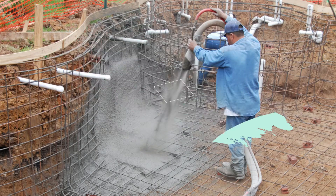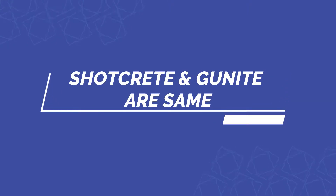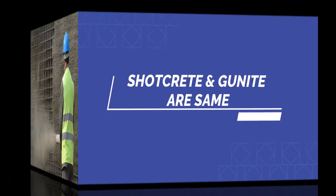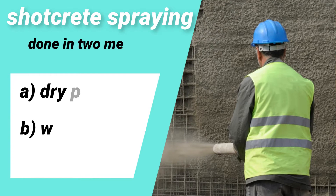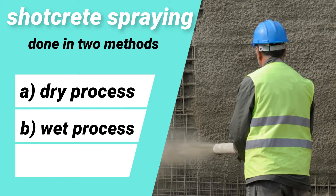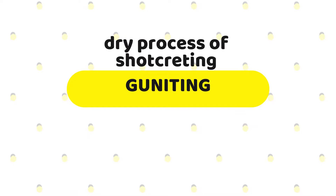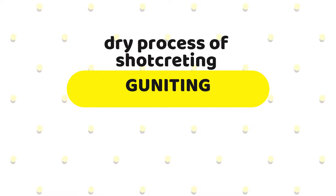And what is gunite or guniting? Actually, shotcrete and gunite are the same. Shotcrete spraying is done in two methods: the dry process and the wet process. The dry process of shotcrete is called guniting.